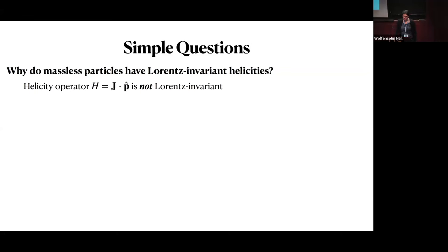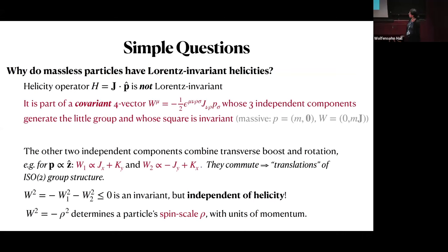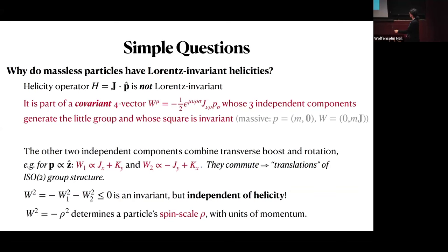I want to explore what's going on here. The reason helicity doesn't look Lorentz-invariant is that it's actually part of a covariant four-vector — the Pauli-Lubanski vector. The three independent components of this four-vector all generate the little group for any particle type, massive or massless; they all leave the momentum invariant. One component is proportional to helicity; the other two are proportional to linear combinations of a transverse boost and a compensating rotation that brings you back to the original momentum. These two — I'll call them W₁ and W₂ — commute with one another, meaning the group structure of the little group for a massless particle is ISO(2), and W₁ and W₂ have the interpretation of translation isometries of a two-dimensional plane.